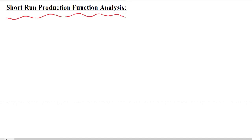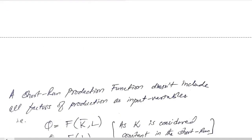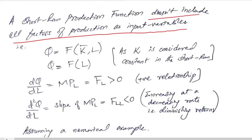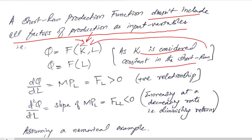In this video we will conduct the short-run production function analysis using optimization tools. The short-run production function doesn't include all factors of production as input variables because capital is not easy to change in the short run, so it is kept constant. Since a constant is not included as an independent variable, only labor appears in the function and capital is silenced.